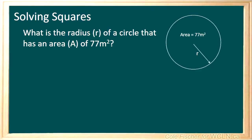What is the radius R of a circle that has an area A of 77 meters squared? We'll start off by writing the formula for the area of a circle: A is equal to pi times R squared.